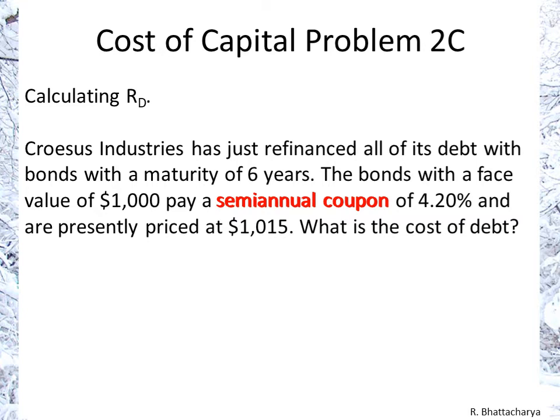First of all, we look at the maturity which is six years. N, the number of payments, is going to be 12 because we have semi-annual coupons over six years. So you will receive 12 payments.